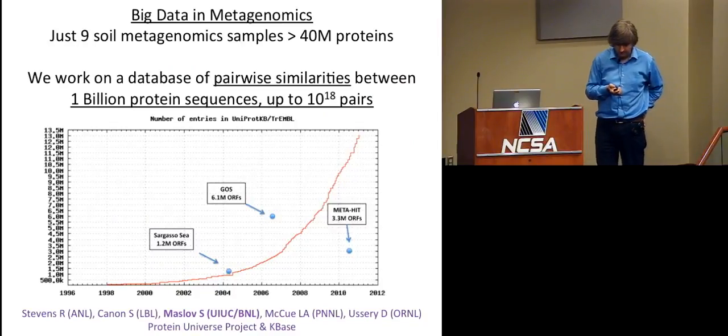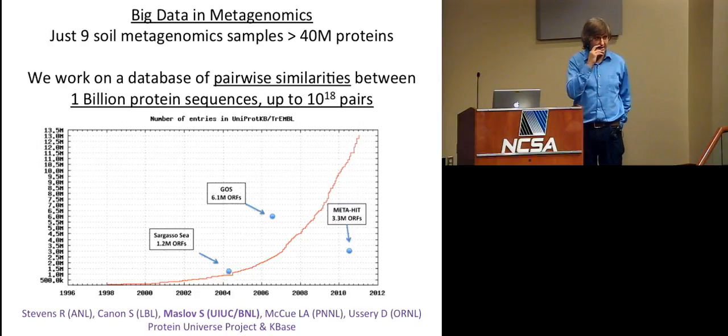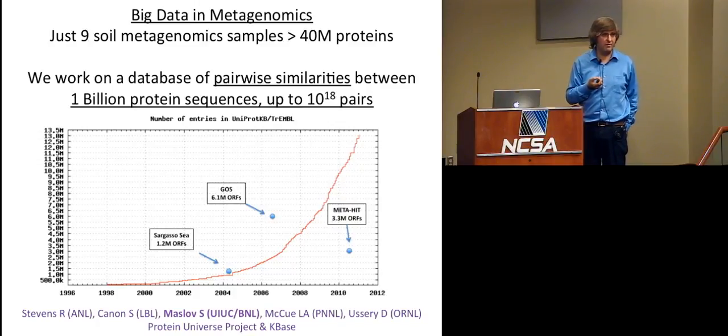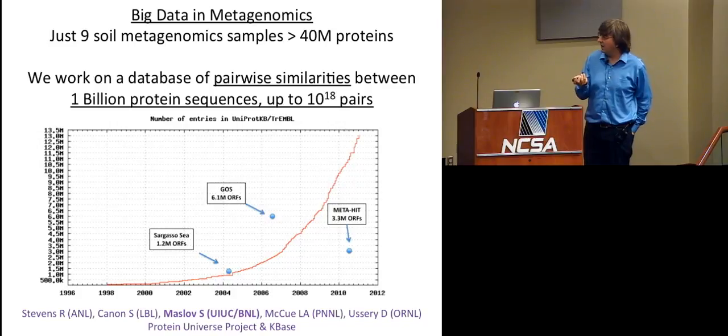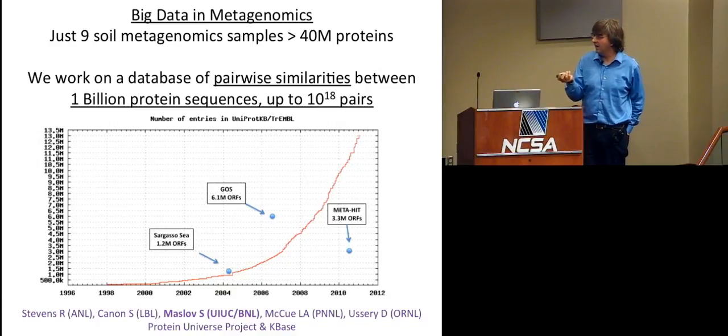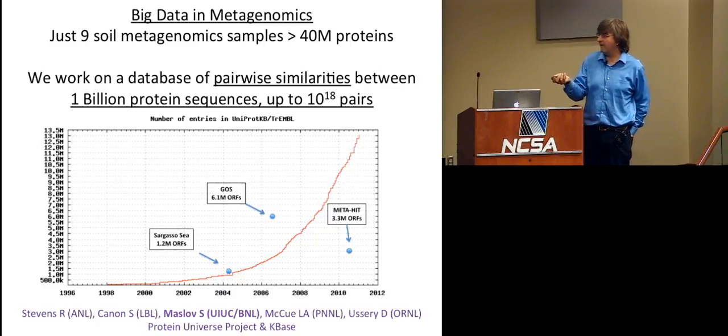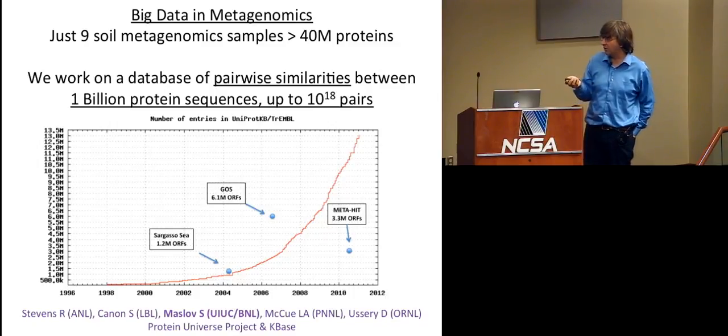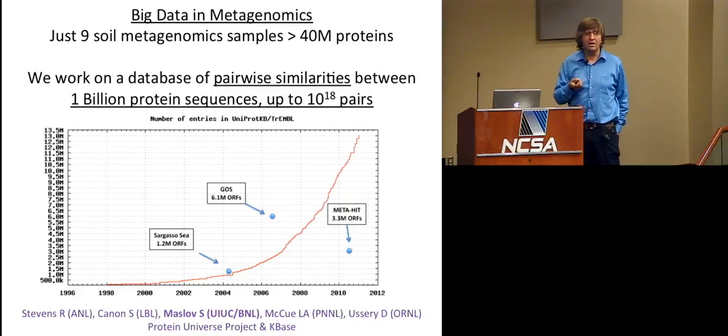And finally, one more big data plot before I finish with the KBase project and move to my own primarily scientific interests. So I mentioned that metagenomics data is growing very rapidly. In fact, just nine of the massive metagenomic samples in the soil has about 40 million proteins. And just to put it in the context, all of the sequenced, whole genome sequenced, non-metagenomic samples at around 2011 were 13 million proteins. And those blue points here are sort of a sample of some of the metagenomic projects along with a number of proteins, a number of genes encoded proteins in those metagenomics projects discovered in the course of those metagenomic projects.